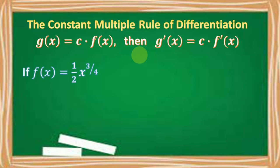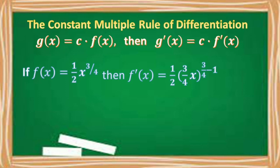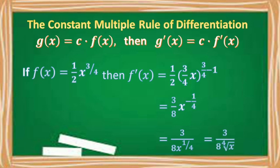If we have f of x is equal to 1 half x raised to 3 fourths, then its derivative is equal to 1 half times 3 fourths x raised to 3 fourths minus 1, which is equal to 3 eighths x raised to negative 1 fourth. Moving x raised to negative 1 fourth to the denominator, we have 3 over 8 times x raised to 1 fourth. For our final answer, we have 3 over 8 times the fourth root of x.